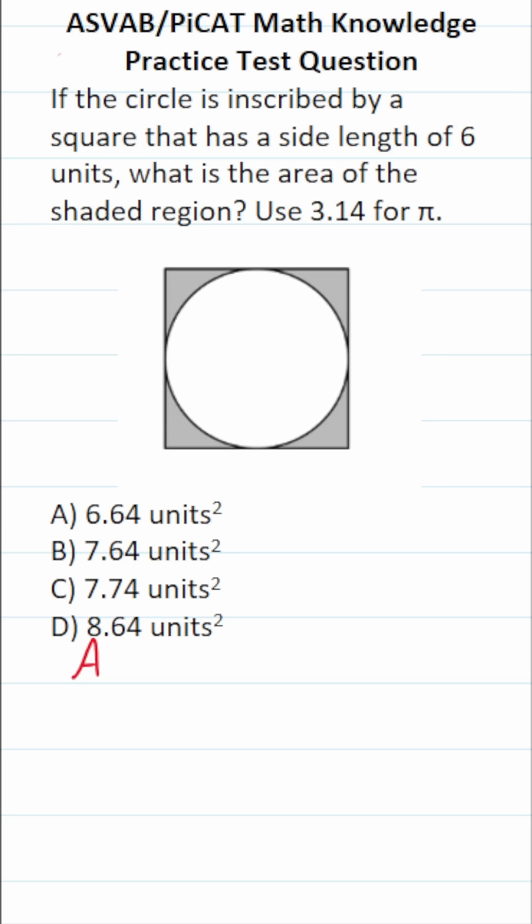So to find the area of the shaded region, we're going to find the area of the square, of course, which is going to be s squared, that is its side length squared, minus the area of the circle, which is pi r squared.